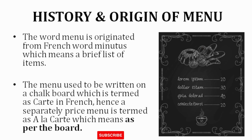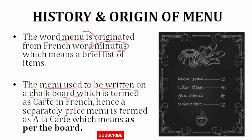The word 'menu' originated from France, from the word 'minutus.' Minutus is a brief description of anything — any component which has a lot of things, a brief description of that is called minutus. From minutus, the word 'menu' came. The menu used to be written on a chalkboard.